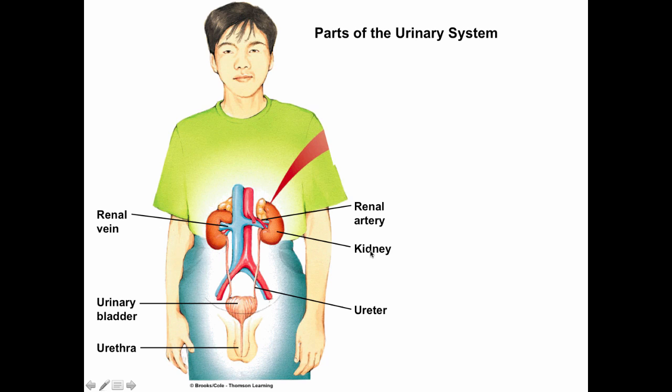The kidneys play many functions besides filtering blood and forming urine, but the focus of our conversation is urine production. Blood comes in, gets filtered, and comes out. The product of filtration — the urine — moves out of the kidney, down the ureter, gets stored in the urinary bladder, and then moves from the bladder through the urethra and exits the body.